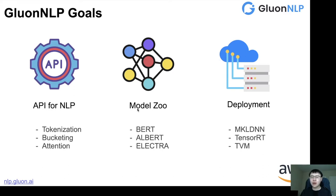The third part is deployment, which is very important especially for industry. In GluonNLP, we offer solutions based on third-party deployment tools — for example, MKL-DNN, TensorRT, and TVM — integrating with these packages to give our users solutions for fast deployment.